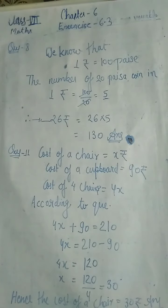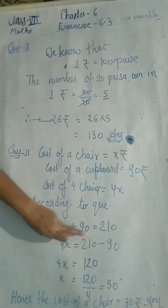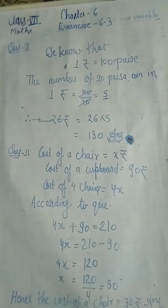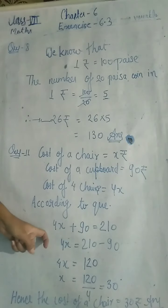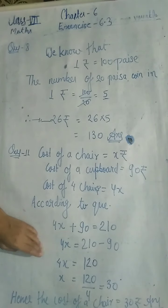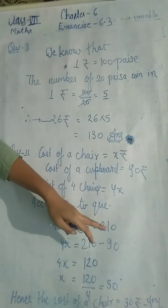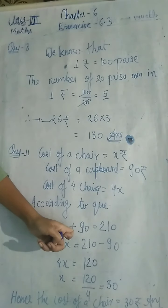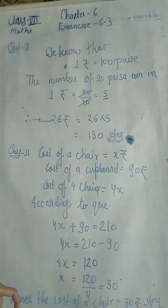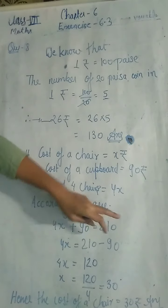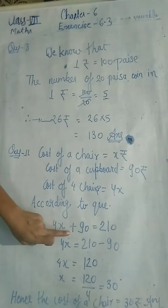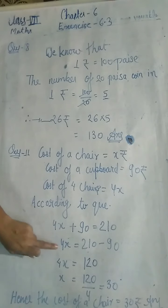According to the question, the total of 4 chairs and a cupboard is equal to 210 rupees. So: 4x + 90 = 210. Ab isko solve karenge. 90 ko left to right shift kiya — shifting 90 from left to right. Plus mein tha toh minus mein ho jaayega. Kitna aaya? 4x = 120.